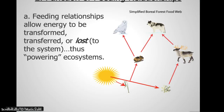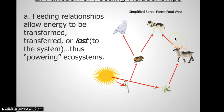To summarize: feeding relationships allow energy to be transformed from sunlight energy and transferred from producers to consumers upward, but also lost. When we say lost, we're only focusing on this system — the energy isn't destroyed permanently, it just escapes the system and can no longer move through the food web.